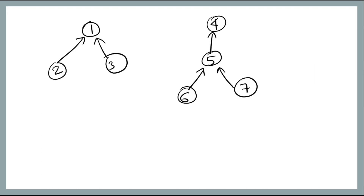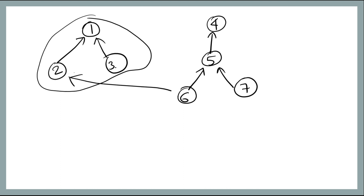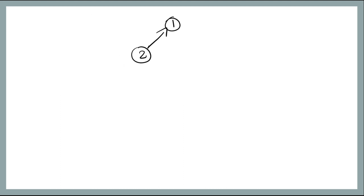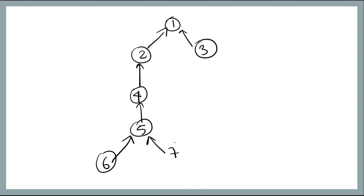Next is union(4, 5) — we make 4 the parent of 5. Now we have just two sets. Redrawing: one set has 1 as root with 2 and 3, and the other has 4 as root with 5, under which are 6 and 7. The last operation is union(2, 6). Since two belongs to one set and six to another, we combine them — making the root of two's set (which is 1) the parent of 4's set. Everything is now in one set.